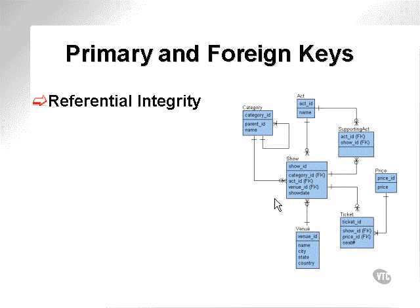There is an option on the DELETE command called CASCADE. What this will allow you to do is if you try to delete a category record and entries exist in the show table, it will also delete the records from the show table containing that category ID. The same applies to child tables of the show table. It's very dangerous using the CASCADE command on a DELETE — be very careful.